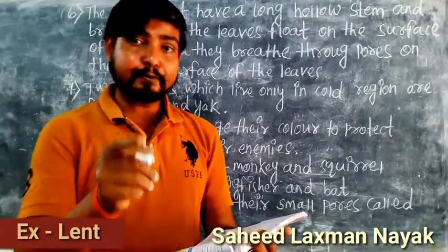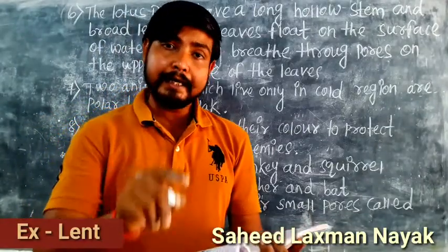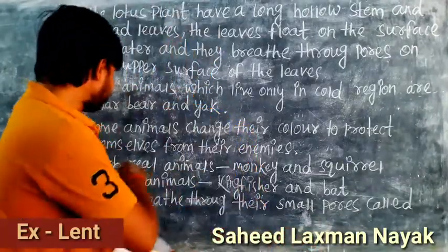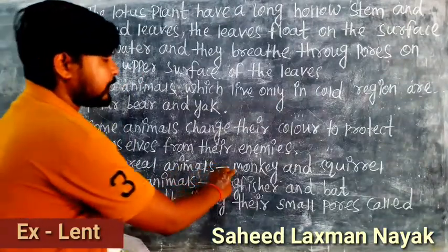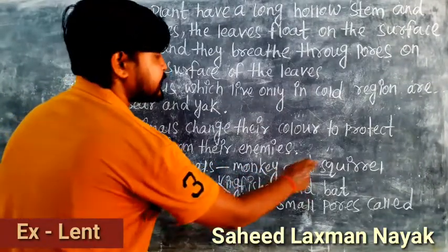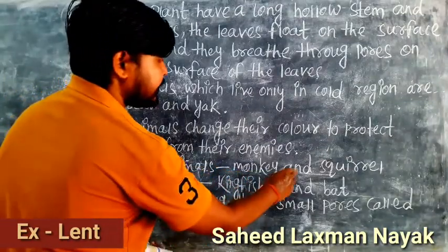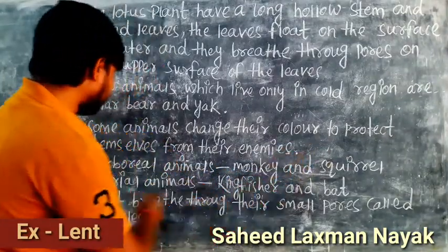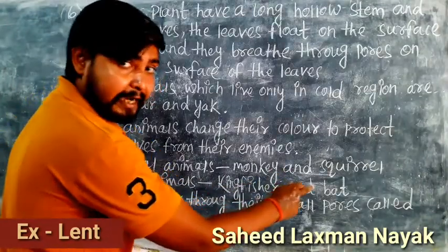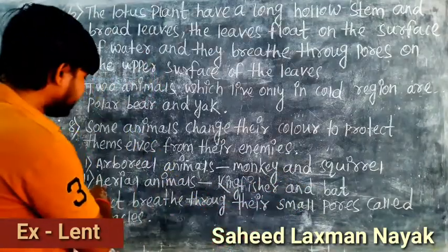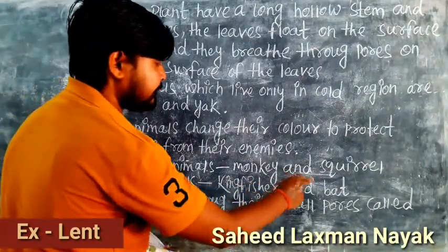Ninth question: name two arboreal animals and two aerial animals. Arboreal animals: monkey and squirrel. Aerial animals: kingfisher and bat.